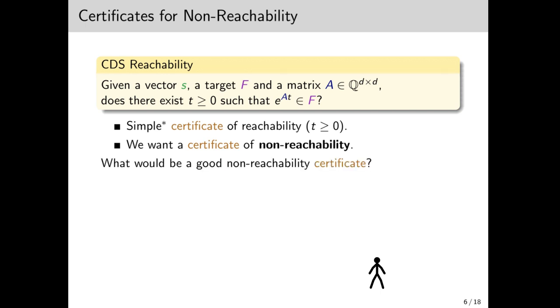What would be a good non-reachability certificate? It should be a set i that separates the orbit from the target, thus showing non-reachability. But in order for it to be useful, it should also be simple to describe, whatever that means. But if i is simple, then proving it contains the orbit becomes difficult. Basically, we're back at the reachability problem.